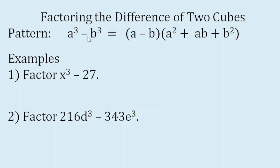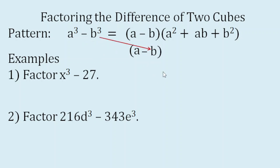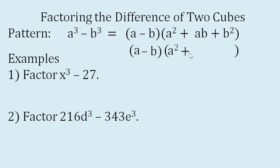To follow this pattern, we first find the binomial factor. The cube root of A cube is A, and the cube root of negative B cube is negative B — so we have the binomial factor. To complete the trinomial factor: square A — A times A is A squared — then it must be followed by a positive sign. Multiply the first and second terms: A times B is AB. Then the last term: negative B squared is plus B squared.